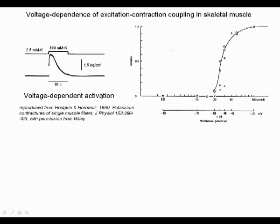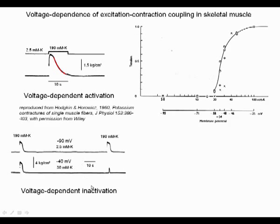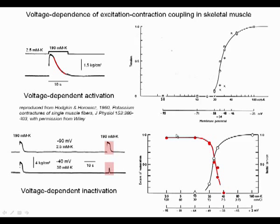Interestingly, they also noticed that muscle fibers spontaneously relaxed while depolarization was maintained, a process called inactivation. It was demonstrated that inactivation was a voltage-dependent process too. Reproducible contractures can be elicited if the fiber is repolarized to resting levels in between. However, if the fiber is maintained depolarized at minus 40 mV for several tens of seconds, EC coupling enters an inactivated state resulting in strong reduction in contraction amplitude. Plotting the amplitude of the test contracture as a function of conditioning depolarization gives rise to a decreasing relationship called the steady-state inactivation curve, which mirrors the voltage-dependent activation curve.